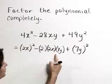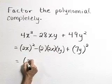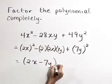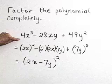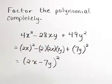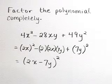So this fits the perfect square trinomial pattern, which factors as 2x minus 7y quantity squared. Our completely factored form of 4x squared minus 28xy plus 49y squared is 2x minus 7y quantity squared.